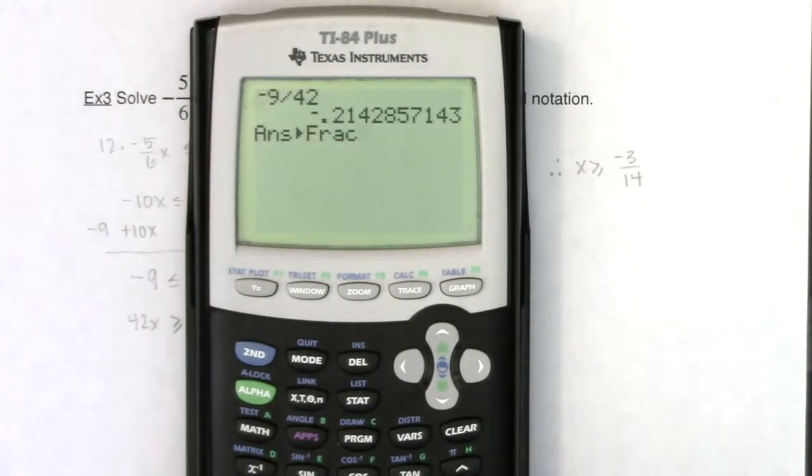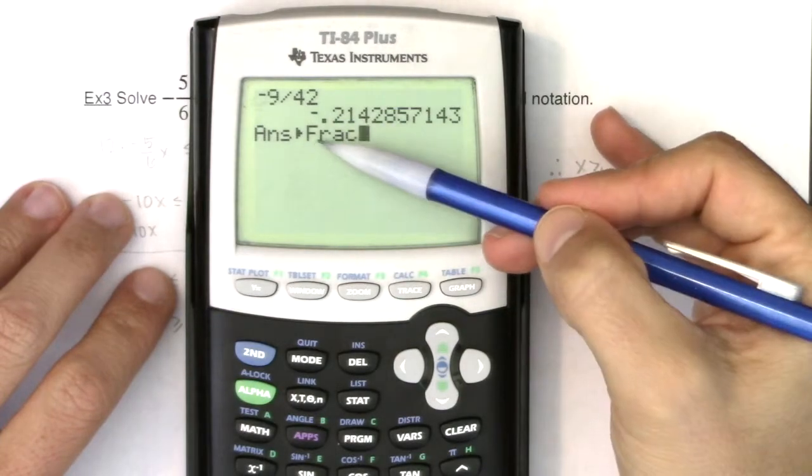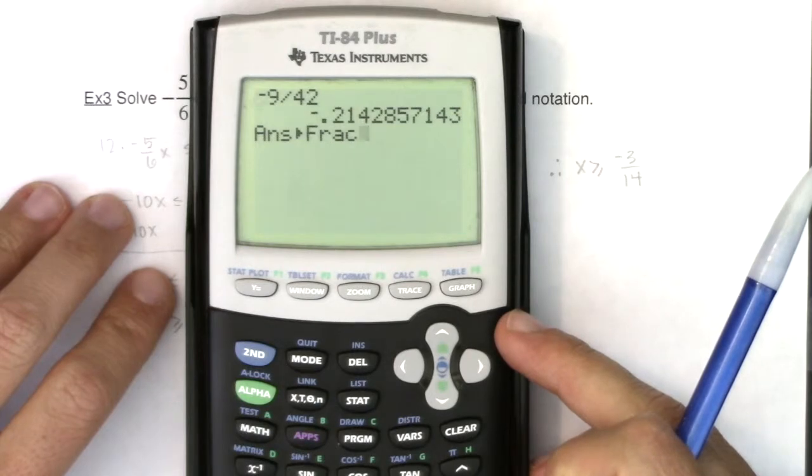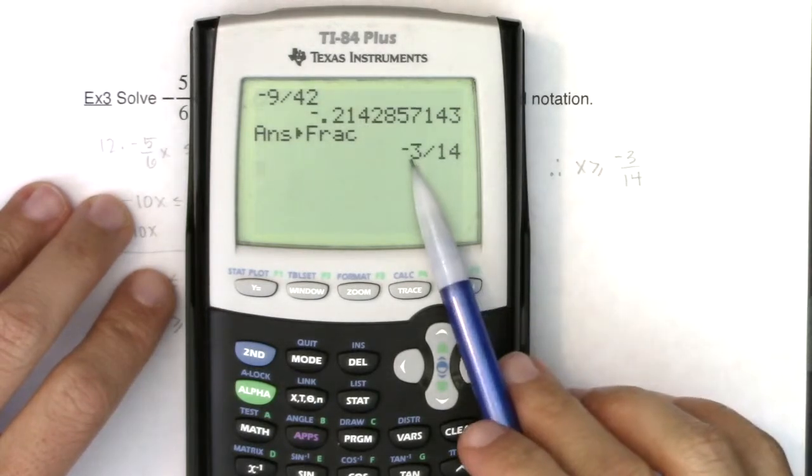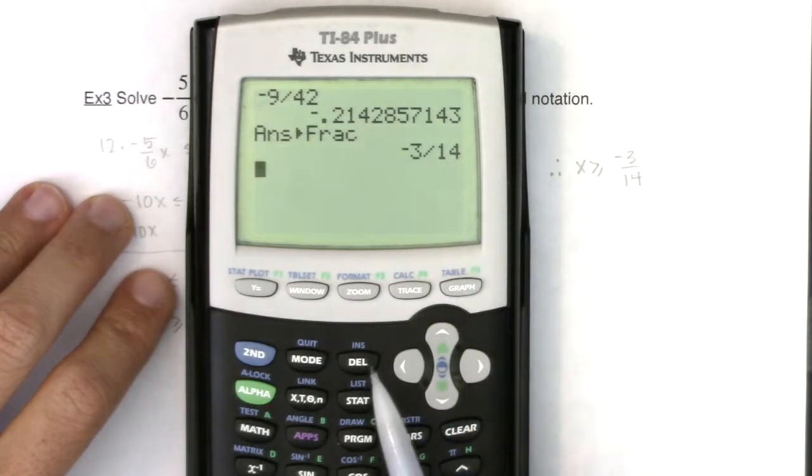And you'll see on your calculator, it says, I'm going to take your previous answer, which was this thing, and I'm going to convert it to a fraction. Now, I'm going to hit enter again. And when I hit enter, you see that it actually tells me the reduced form of negative 3 over 14.